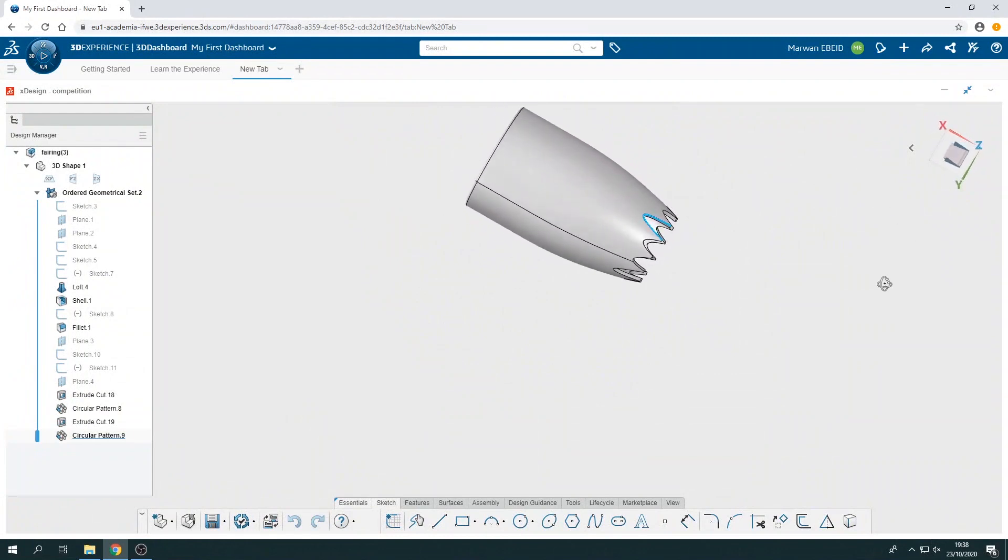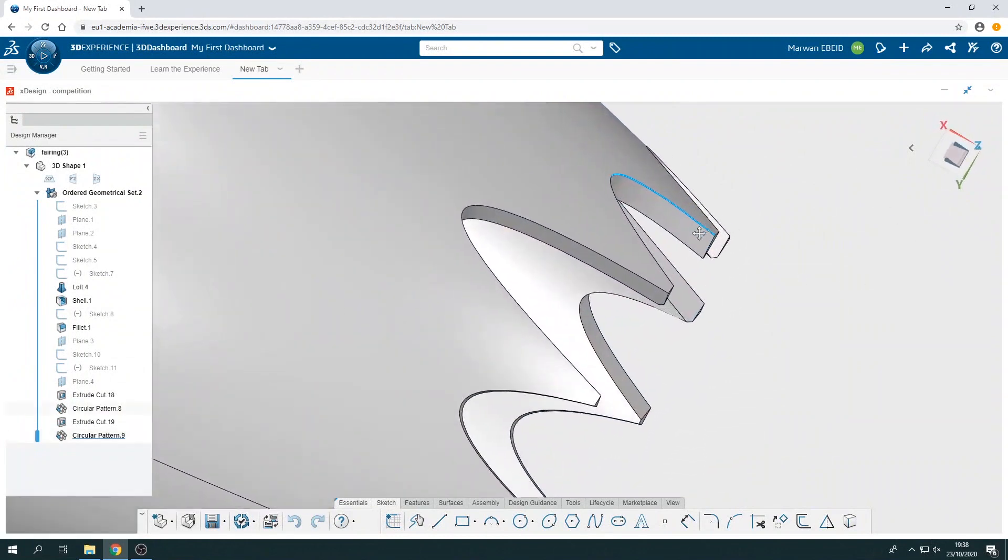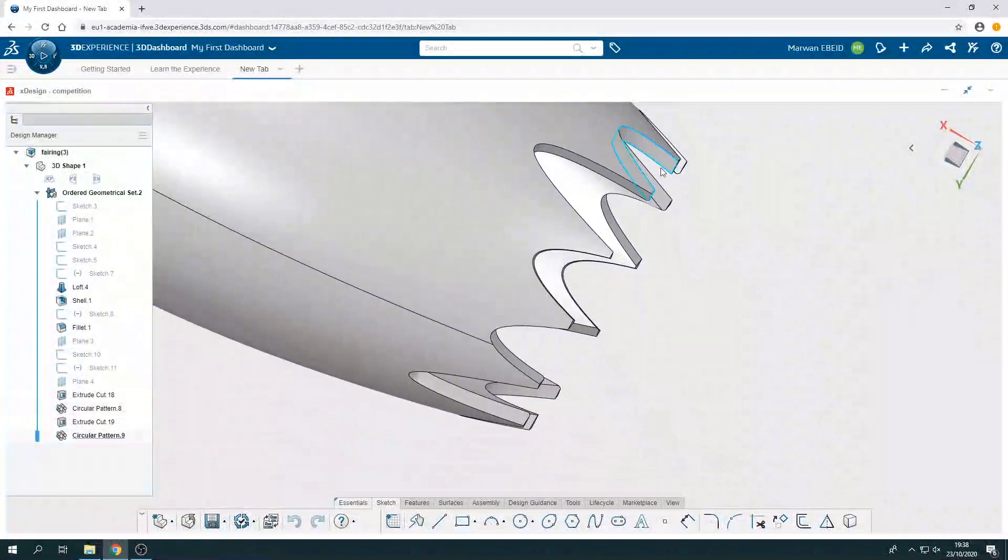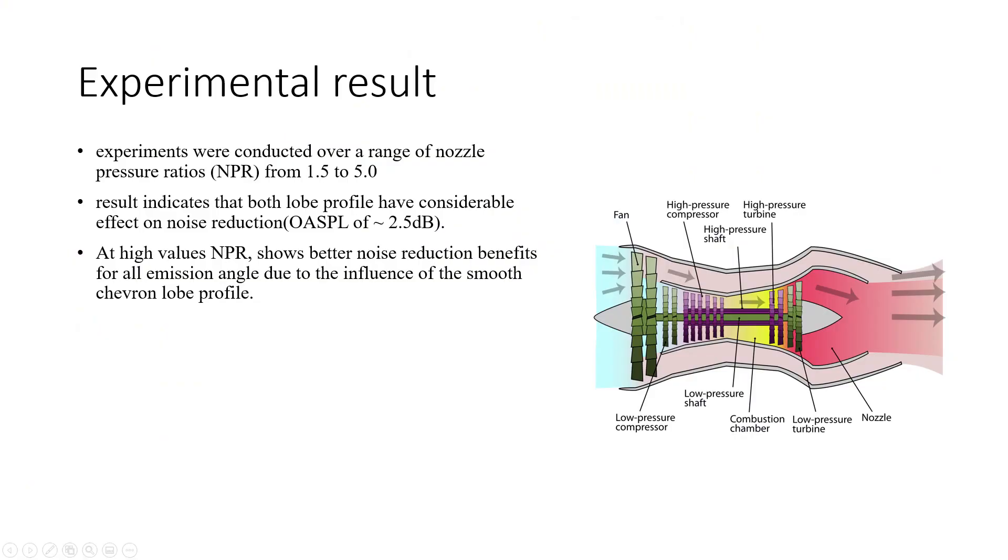Some experiments were conducted over a range of nozzle pressure ratios (NPR) from 1.5 to 5. The result indicates that both chevron asymmetric and chevron low profile have considerable effect on noise reduction. This is a reduction in OASPL of 2.5 decibels for both of the symmetrical chevron nozzle tested. However, at high values of NPR, the sinusoidal chevron nozzle shows better noise reduction benefits for all emission angles due to the influence of the smooth chevron low profile.